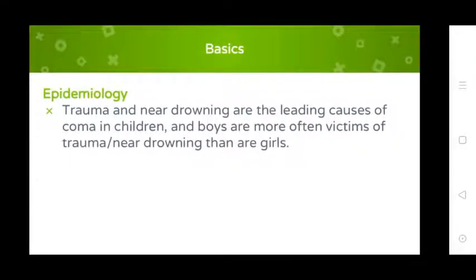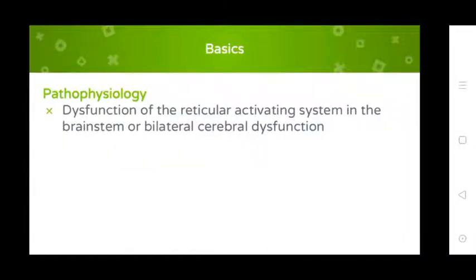Epidemiology of coma: trauma and near-drowning are the leading causes of coma in children, and boys are more often victims of trauma and near-drowning than girls. Pathophysiology involves dysfunction of the reticular activating system in the brain stem or bilateral cerebral dysfunction.